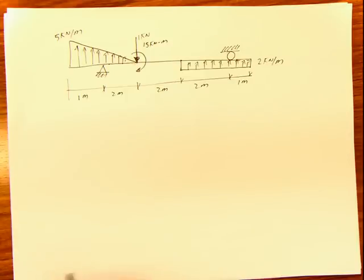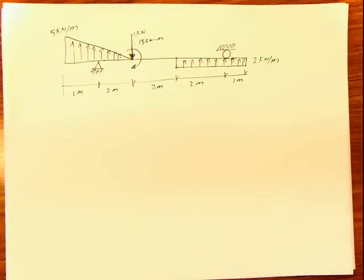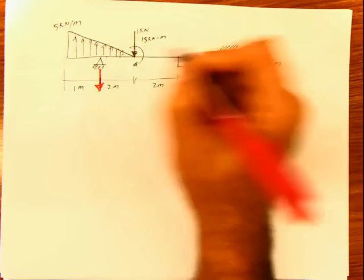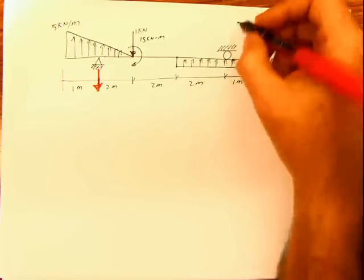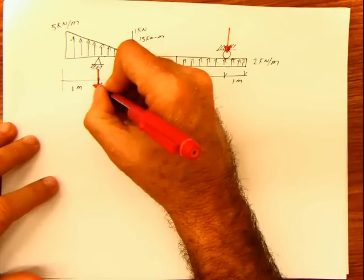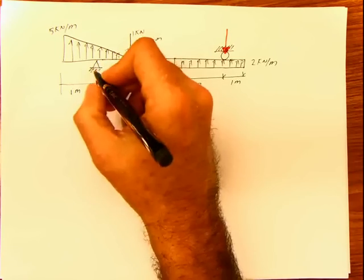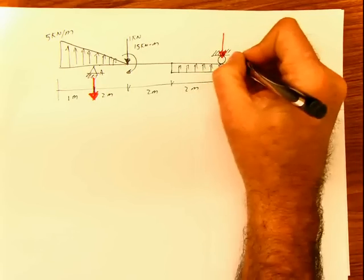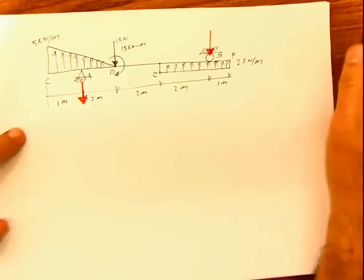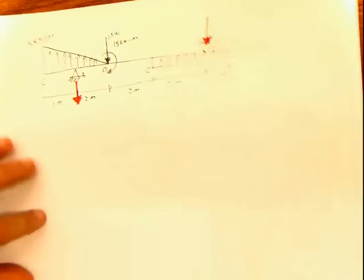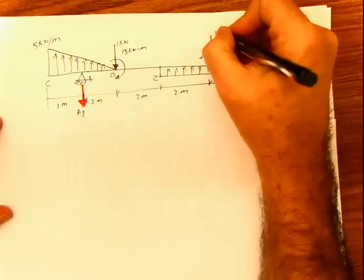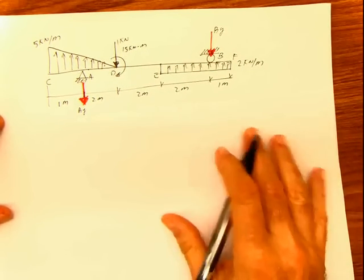So let's start this problem here. The first thing that we have to do, as always, is place the reactions. I know because this is going up like that, the reaction is going to be acting down. And this reaction, because this is like that, is also going to be acting down. But it doesn't matter — you can put it in any way that you want. At the end, the sign is going to tell you if you did it correctly. So let's put letters to this. I'm going to say this is A and B. And then you're going to put here C, D, E, and F. We're going to do a summation of moments in order to calculate, first of all, the reactions. This is going to be Ay, and this is going to be By.